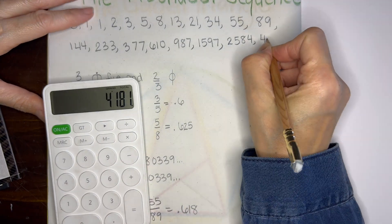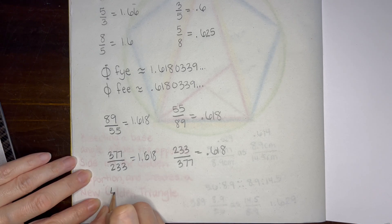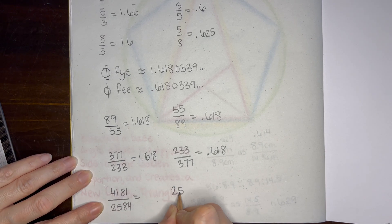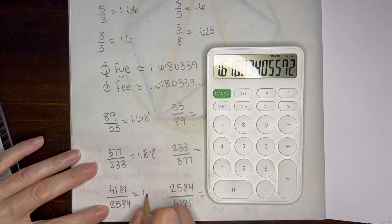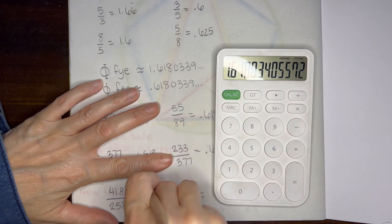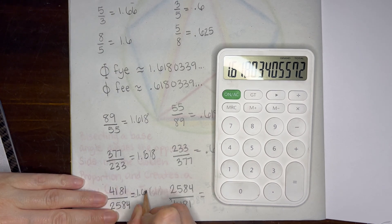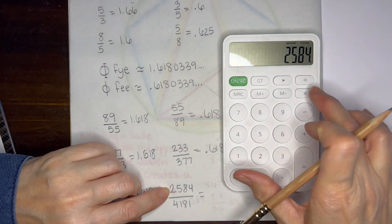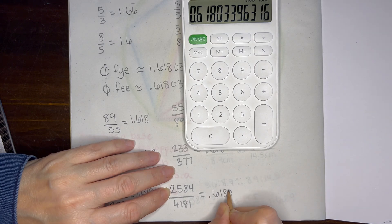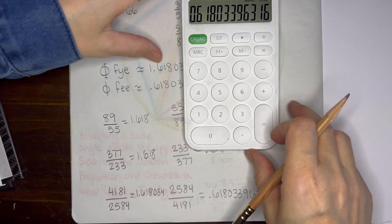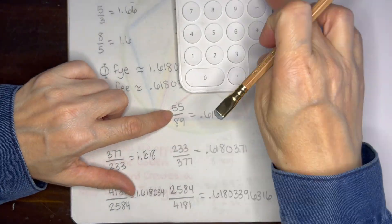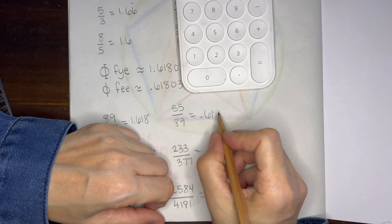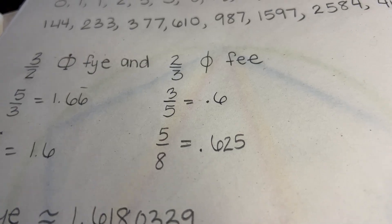So we went ahead and continued with several more parts of the sequence so that we could do our ratios and our fractions and see if we could get any closer to the actual constant. My mistake actually was that I only went three digits out for the first few problems or mathematical computations, and I realized I needed to go farther out so that we could really see how the progression was coming along.